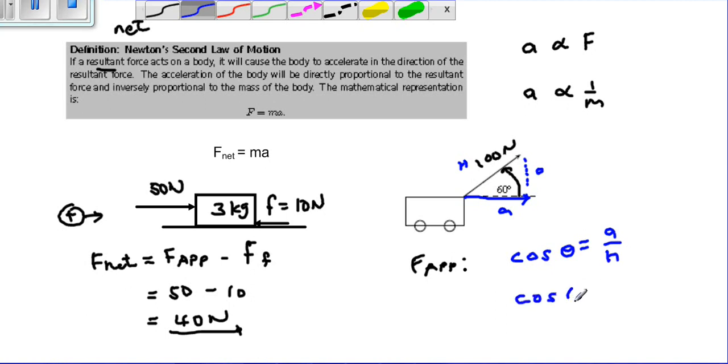In our case, we have cosine of 60 degrees equals the horizontal component of applied force over our hypotenuse, which is 100 newtons. Our adjacent will be 100 cosine 60 degrees. If we say cosine 60 degrees times 100, which gives us 50 newtons, will be our adjacent.